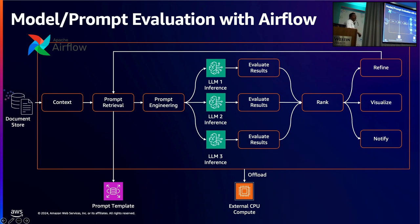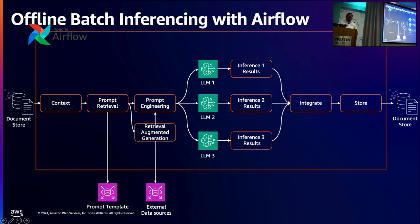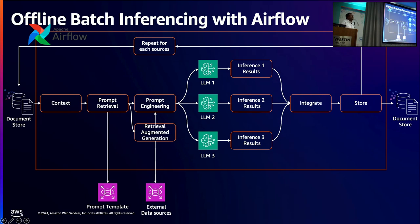Use additional compute to offload the data so you are not running everything on Airflow workers directly. The next example is offline batch inference — not everything is online, not everything is a chatbot. You might have a large corpus of data, have already identified your prompt and your LLM, and now want to process it at scale. You can use Airflow to take the datasets, run them through multiple LLMs, and integrate the data — for example doing summarization, entity extraction, and additional activities — into a single corpus and store it.